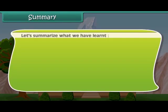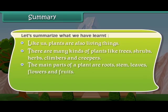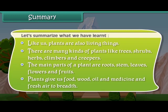Now friends, let us summarize what we have learned so far. Like us, plants are also living things. There are many kinds of plants like trees, shrubs, herbs, climbers and creepers. The main parts of a plant are roots, stem, leaves, flowers and fruits. Plants give us food, wood, oil, medicine and fresh air to breathe.